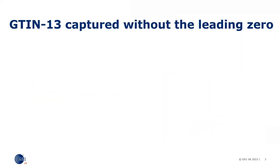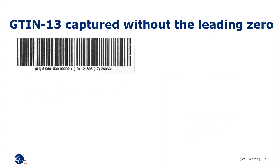What if the GTIN13 is captured without the leading zero, as shown here? The GTIN13 has been entered without the leading zero, and the barcode image generating software, knowing this is a fixed length of 14 digits, has created and added check digits at the end, creating a brand new number. This is now a GTIN14.